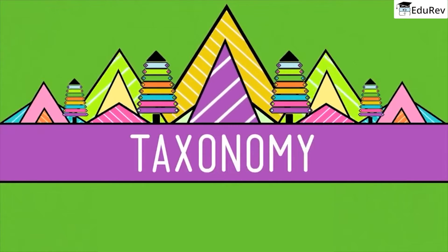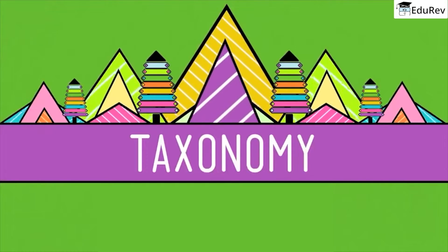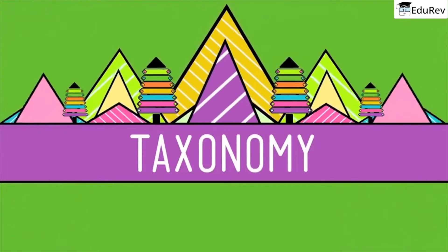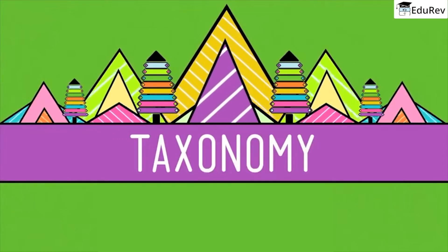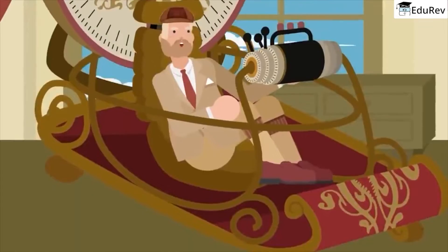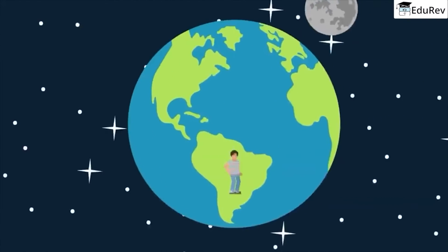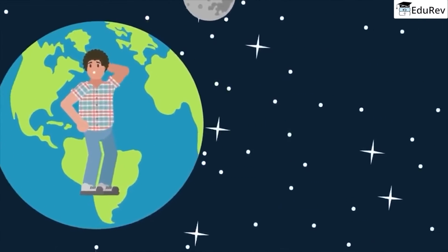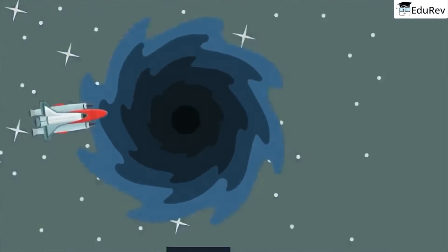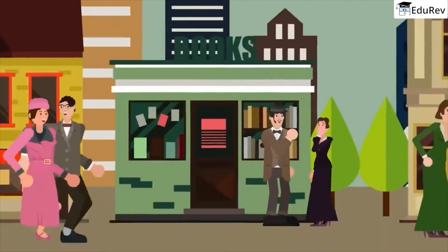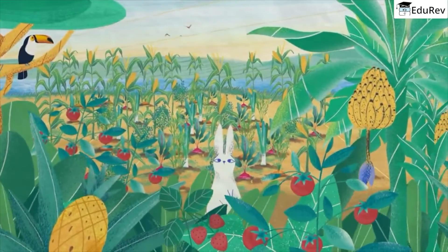How about understanding this concept of taxonomy with an interesting story? Let me paint a picture for you to understand taxonomy in a better way. Imagine that a man borrowed a time machine to go back in time and see the world. The man arrives a couple of centuries behind and is astonished by the beauty and diversity of flora and fauna.